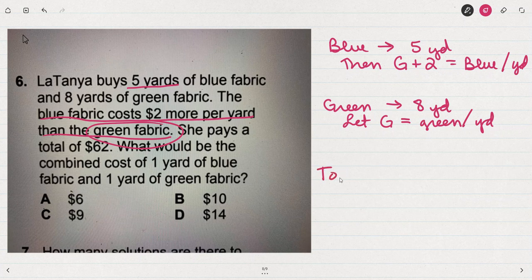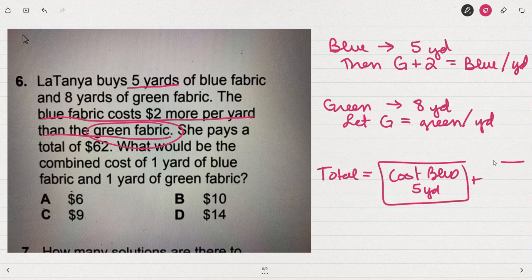Now if she pays a total, then that means the cost for the five yards of blue added to the cost of eight yards of green has to add up to $62.